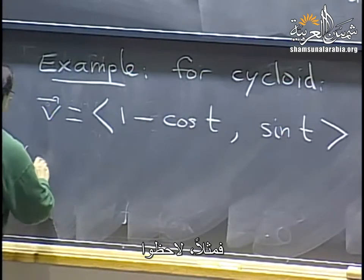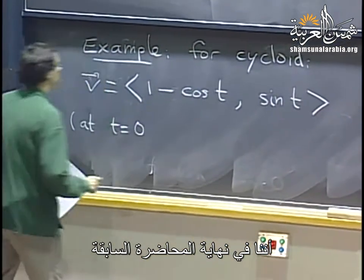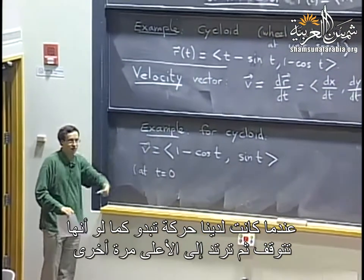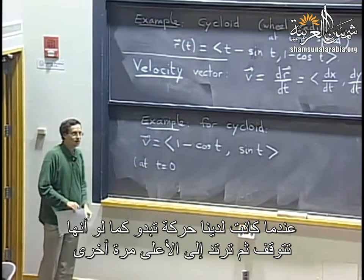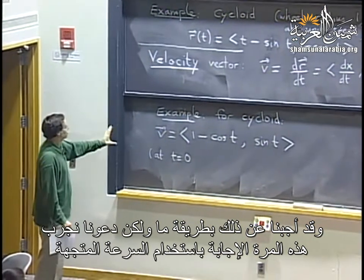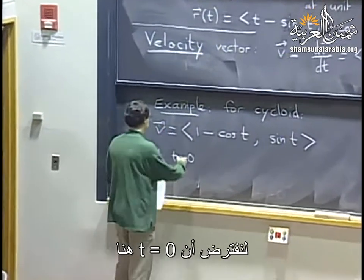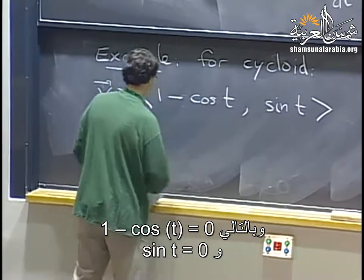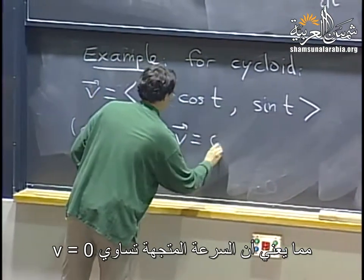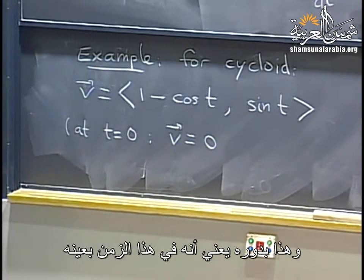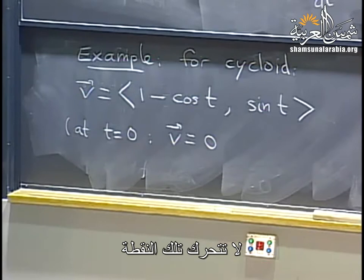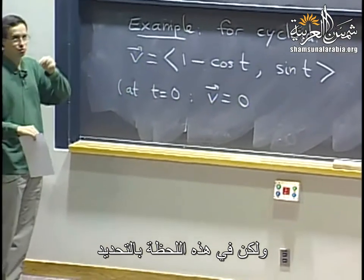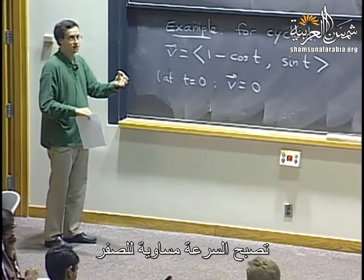Remember last time we were trying to figure out what exactly happens near the bottom point, when we have this motion that seems to stop and go backwards. Let's understand it in terms of velocity. If I plug t equals 0: 1 minus cosine t is 0, and sine t is 0. The velocity is 0. So at that particular time, our point is actually not moving. It's been moving just before and starts moving just afterwards, but at that particular instant the speed is 0.